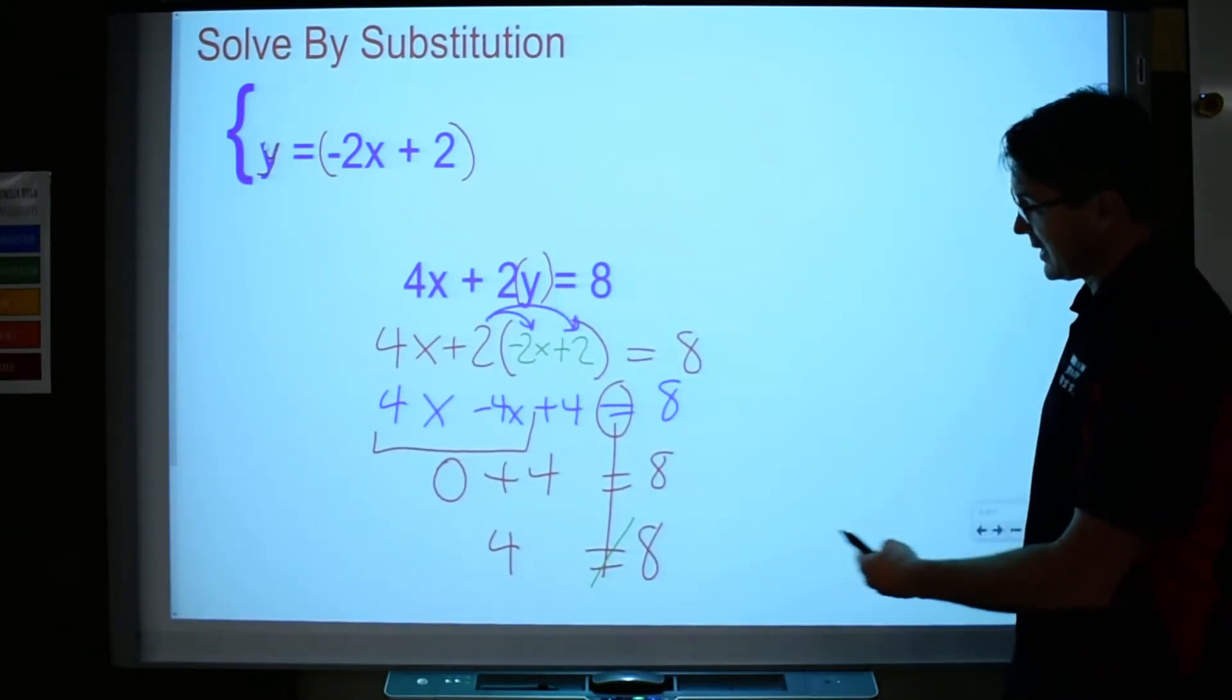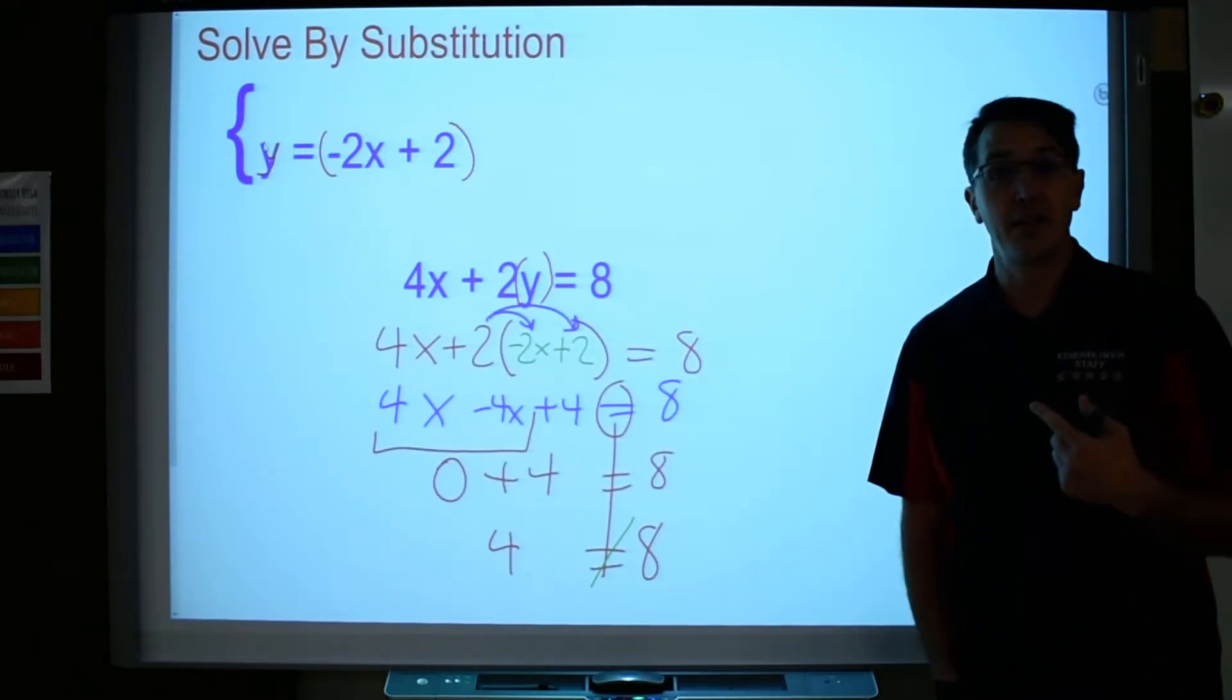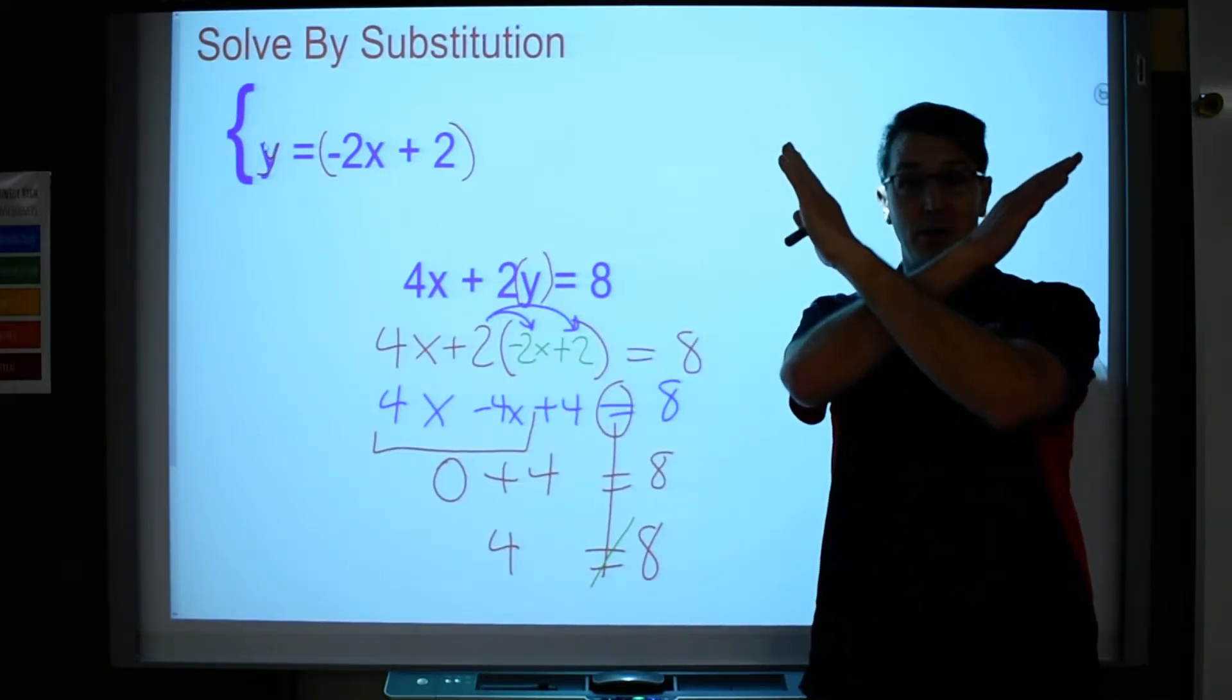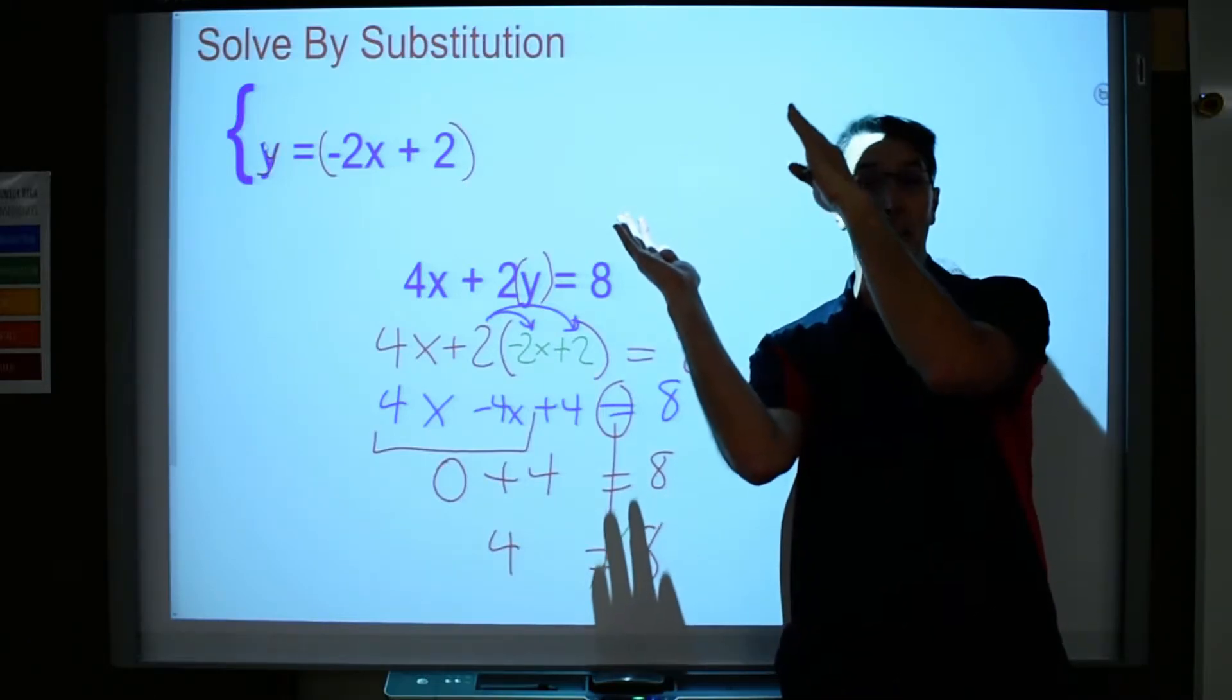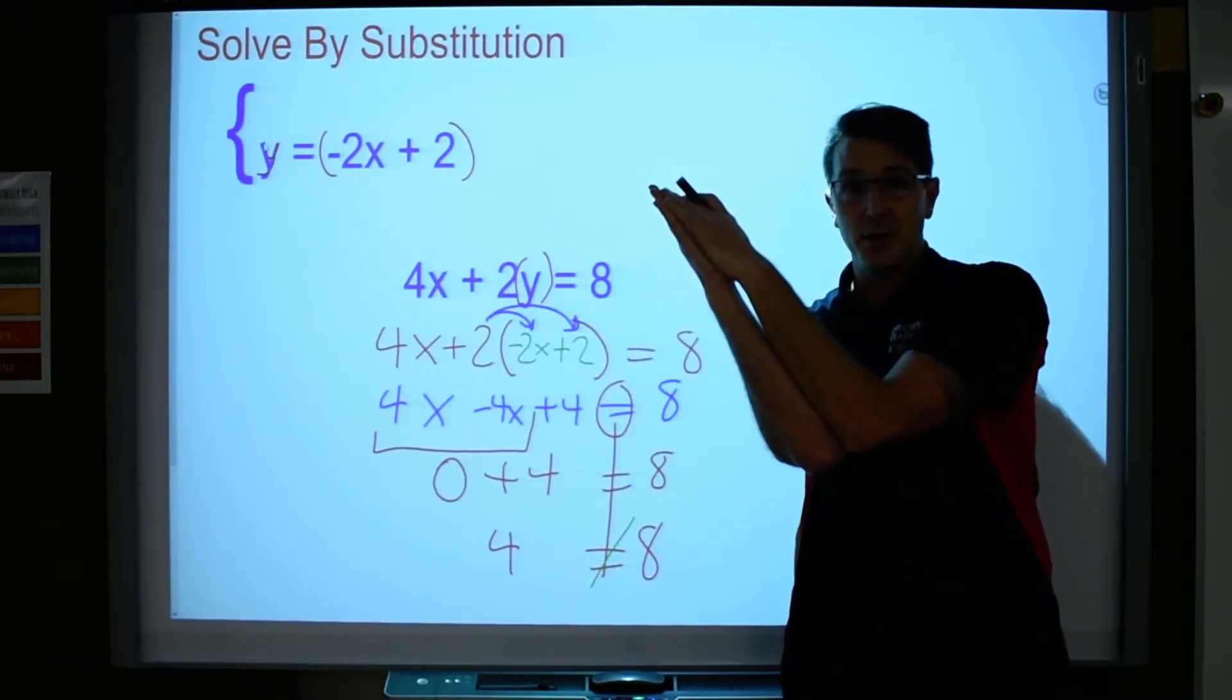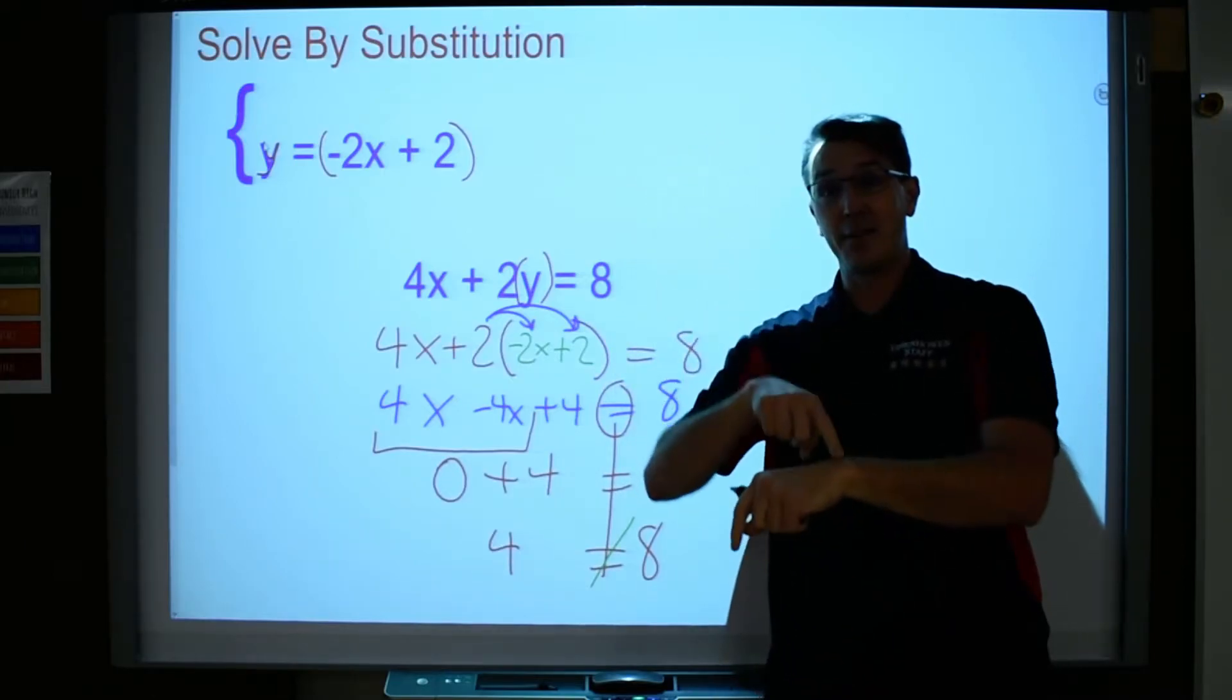That means these two systems don't work. There's no value that you can find for x. And the only reason that would happen, you have three options. You can have two lines intersect, you can have two lines that are parallel, and you can have two lines that are the same line. That's the only three options you have on a coordinate plane. And so when lines intersect, we can have a solution.